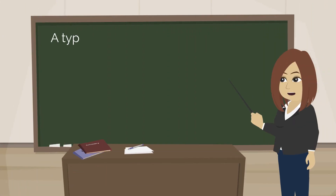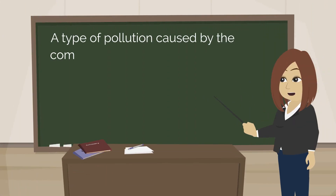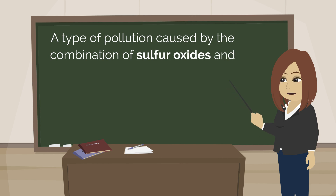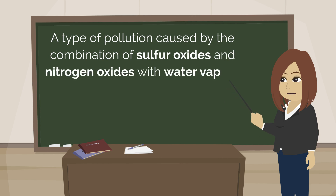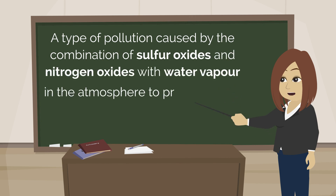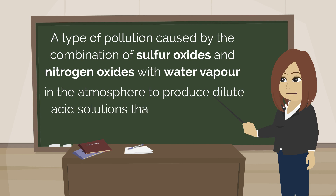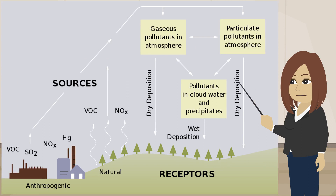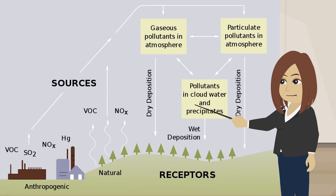A type of pollution caused by the combination of sulfur oxides and nitrogen oxides with water vapor in the atmosphere to produce dilute acid solutions that fall to earth as rain. Let's check this acid rain diagram.